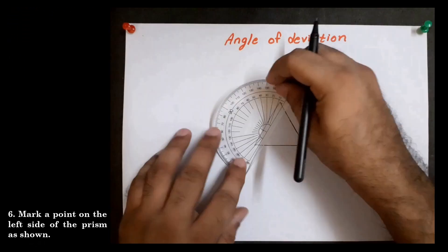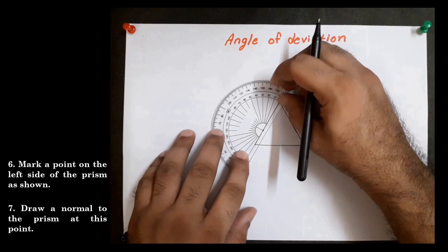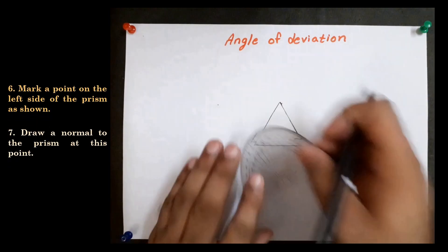Mark a point on the left side of the prism as shown. Draw a normal to the prism at this point.